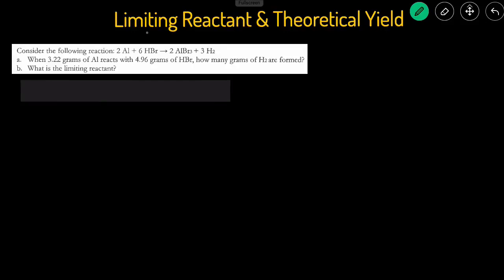In this video we'll be going over two ways to do limiting reactant and theoretical yield problems — one is a shortcut and one is the full process. Consider the following reaction: when 3.22 grams of aluminum reacts with 4.96 grams of HBr, how many grams of H2 are formed? Part B asks what is the limiting reactant.